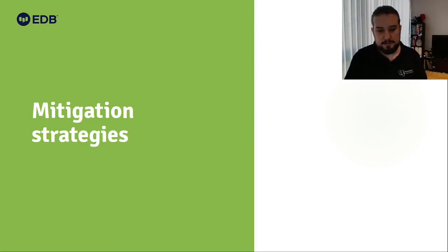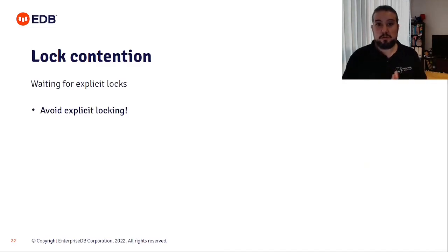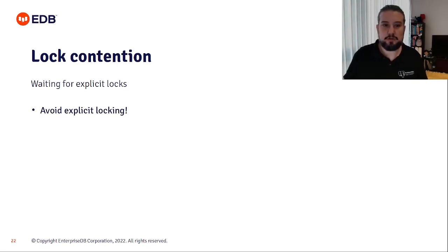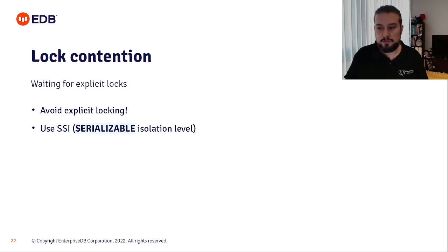For lock contention: when you have explicit locks in your application — which you shouldn't, because they can lead to waits — just avoid them. Don't use explicit locks and nobody has to wait for someone else to finish. Use SSI or the serializable isolation level and keep retrying if what you're trying to write is in use by someone else. You need to make your application tolerant — allow it to retry operations to the database.